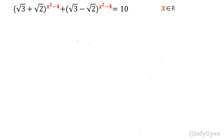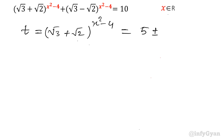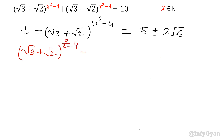So we write t = (√3 + √2)^(x² - 4) = 5 ± 2√6. Now 5 ± 2√6 is again an irrational number, and it looks like it involves √3 and √2. So let us write two equations: first, (√3 + √2)^(x² - 4) = 5 + 2√6.